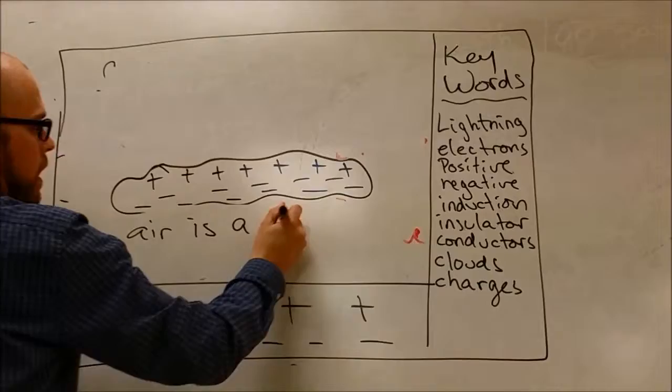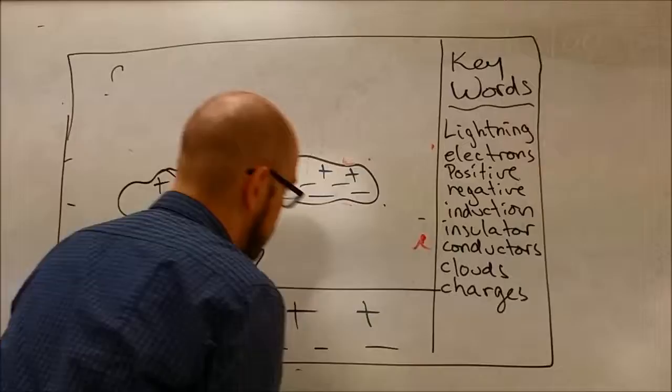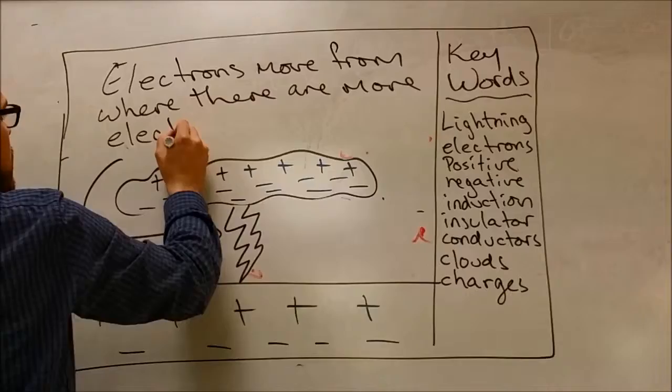Once it's close enough, air acts as a conductor and the electrons transfer from the cloud to the top of the ground. Electrons move from where there are more electrons to less electrons.